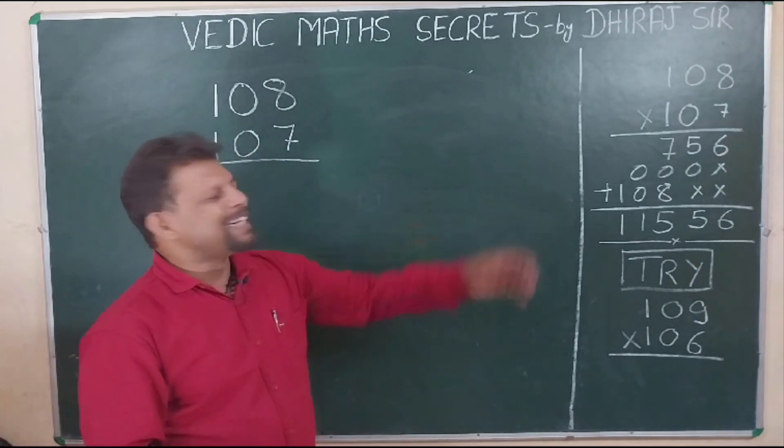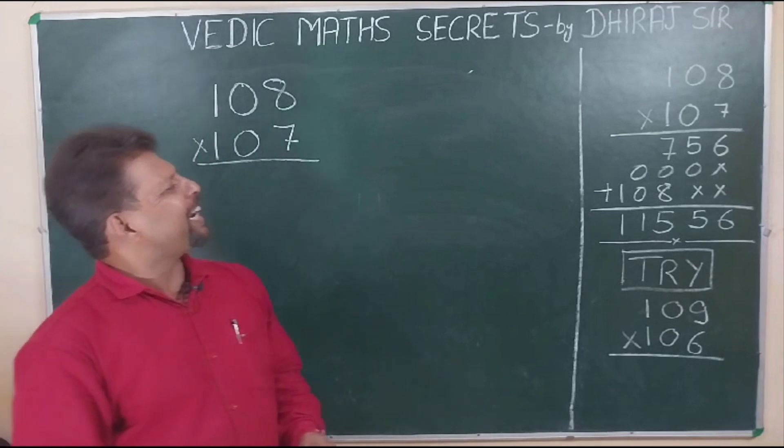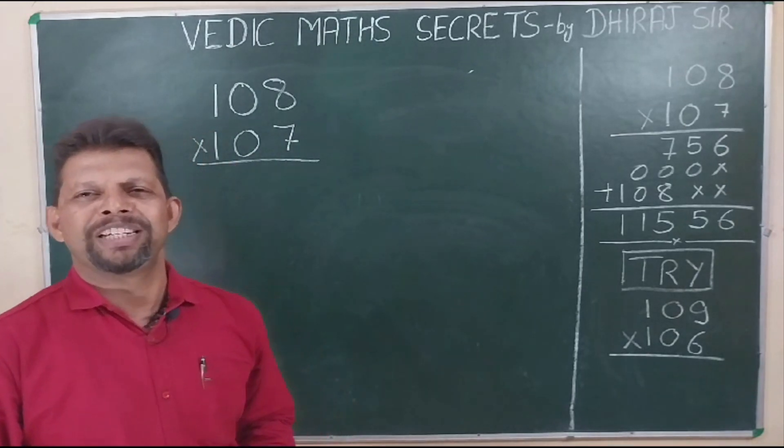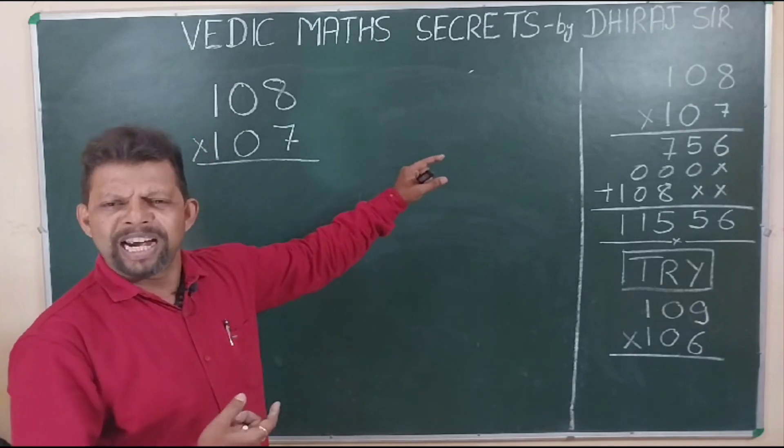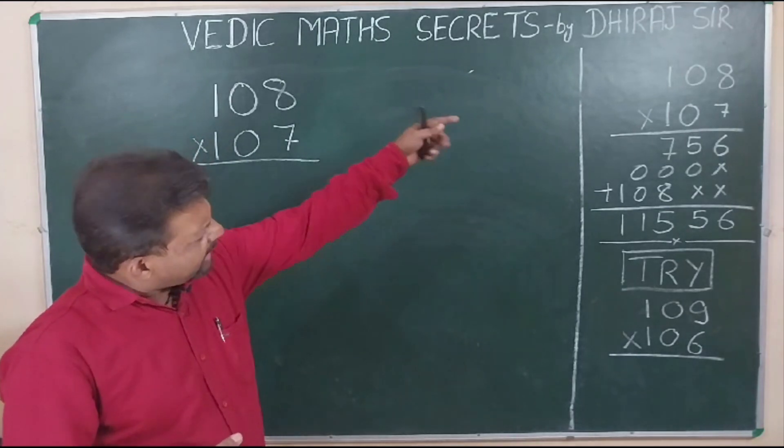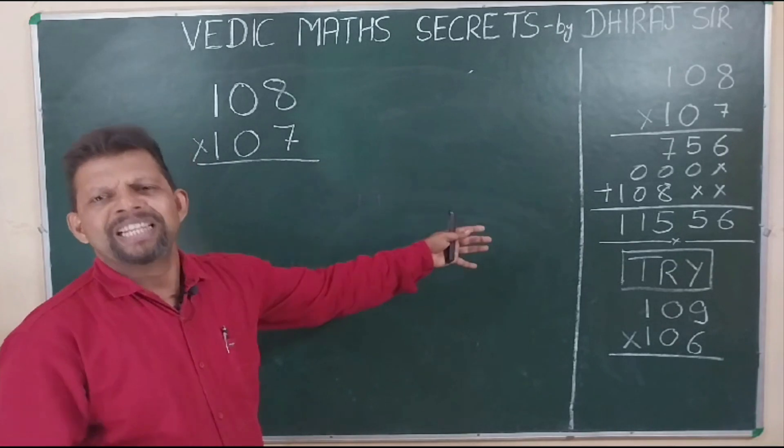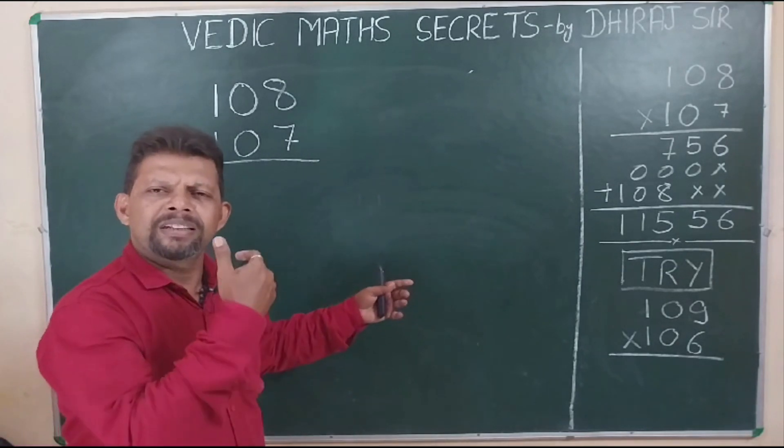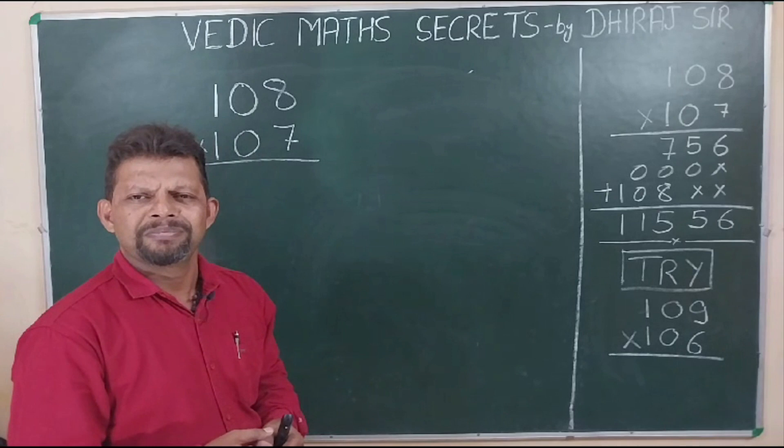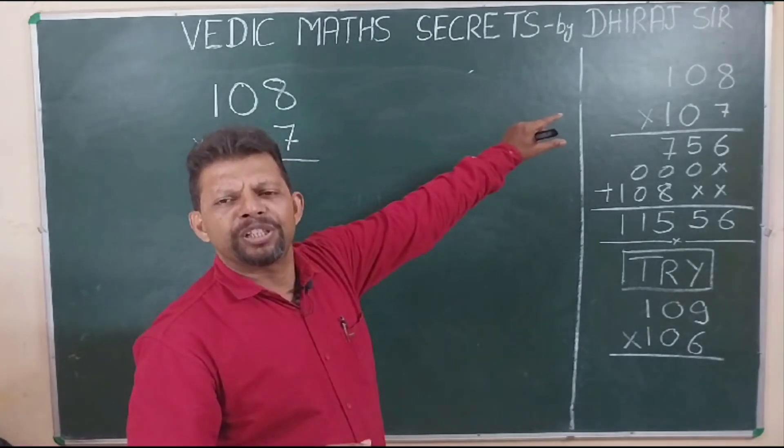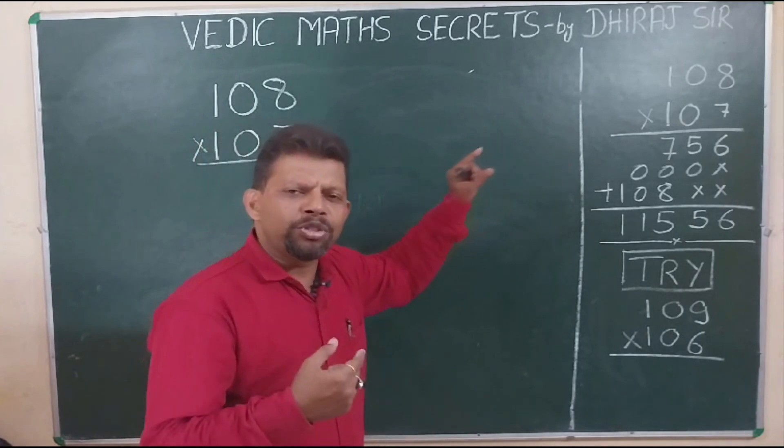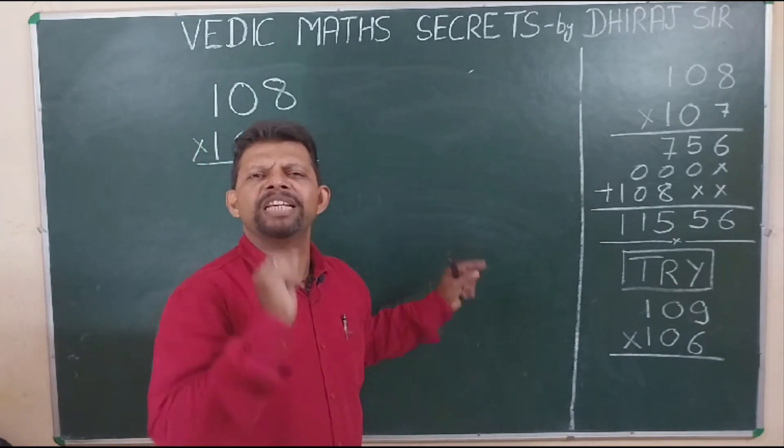Let's begin with this multiplication. It's 108 multiplied by 107. This is a number smaller than the previous one which I had taken. But again, this takes time and the possibility of silly mistakes. Let's see how this very same multiplication can be done using Vedic Maths method in a single line.